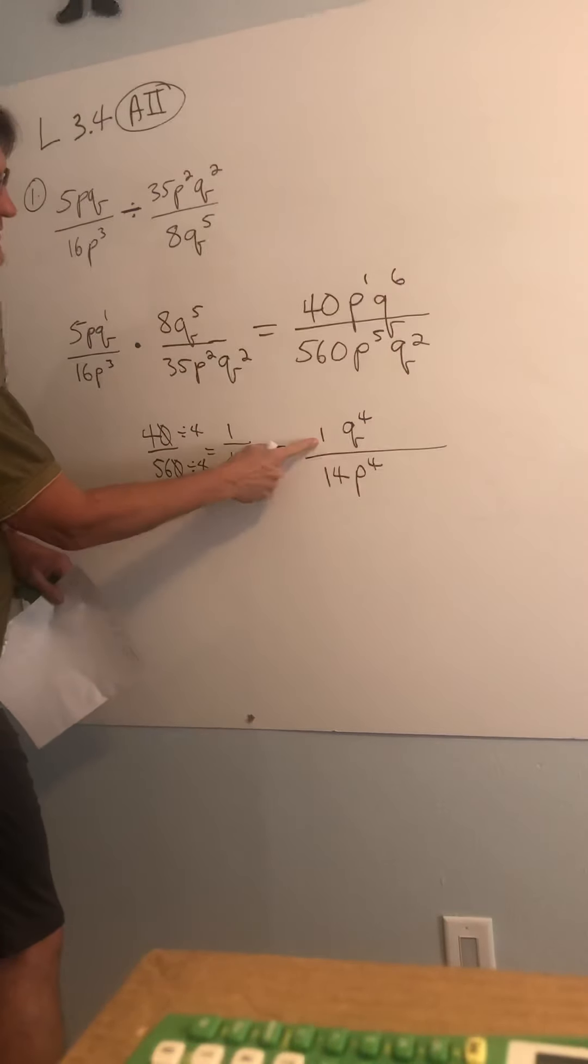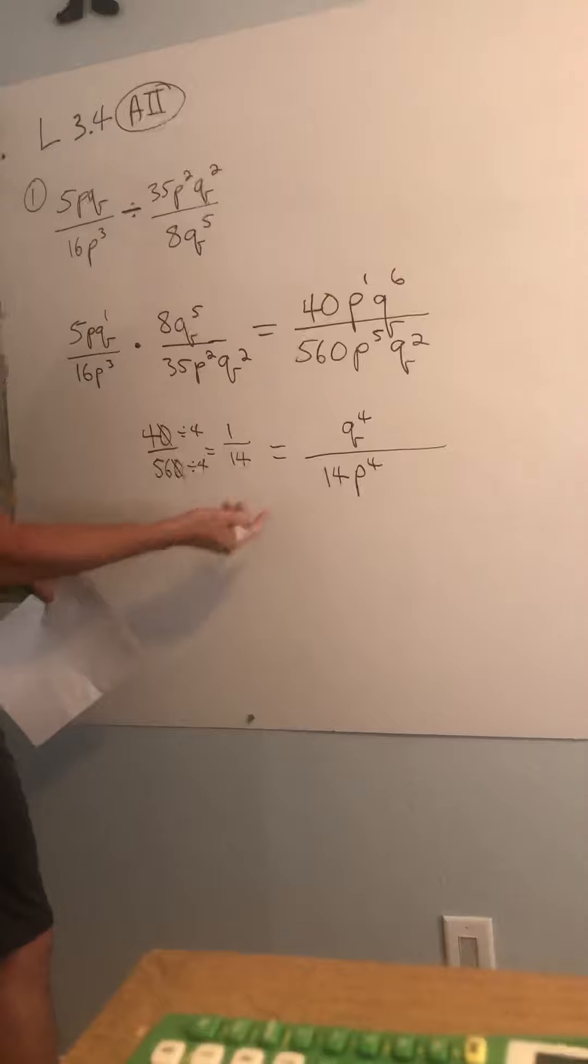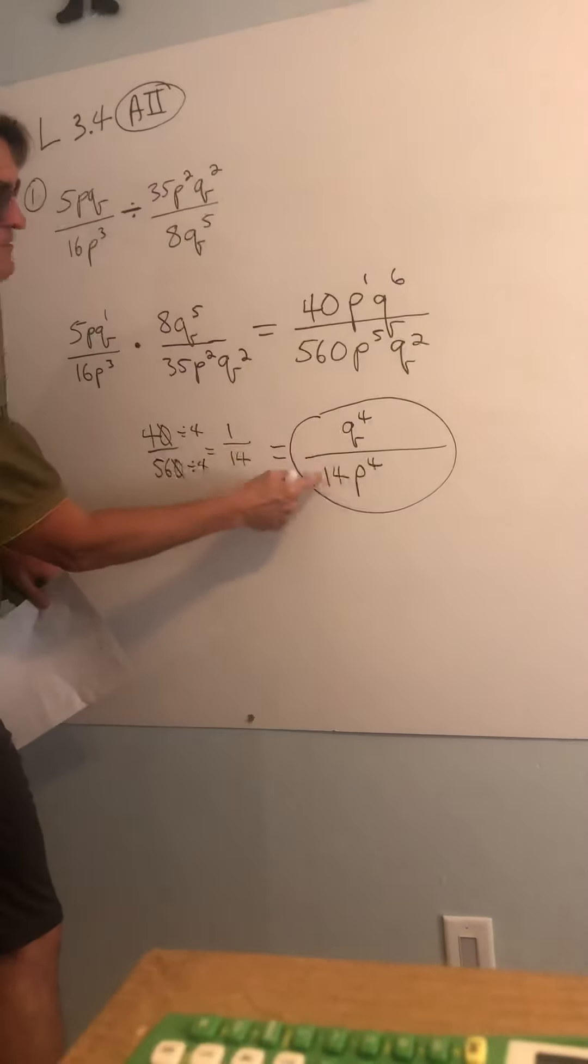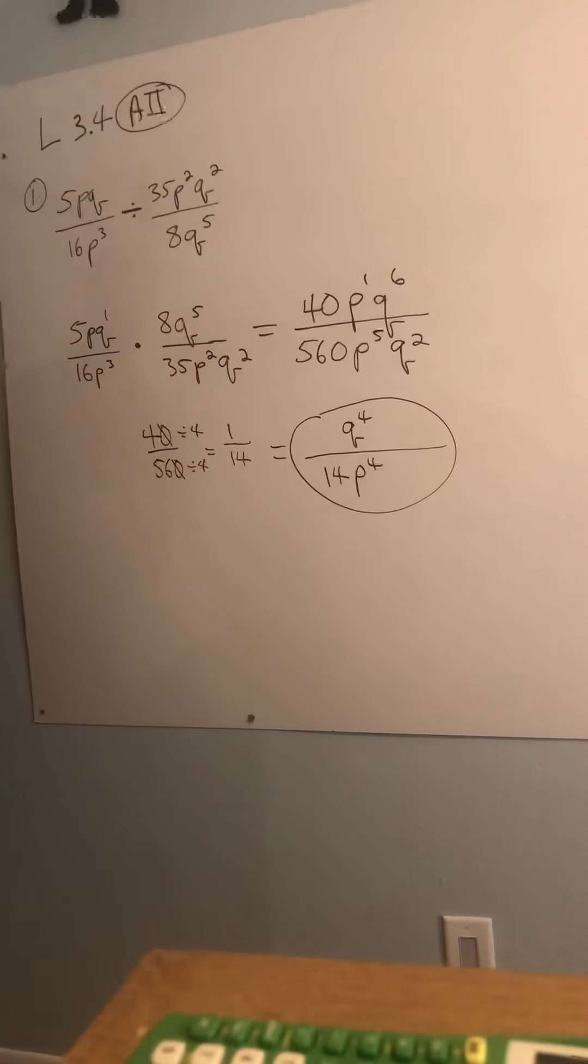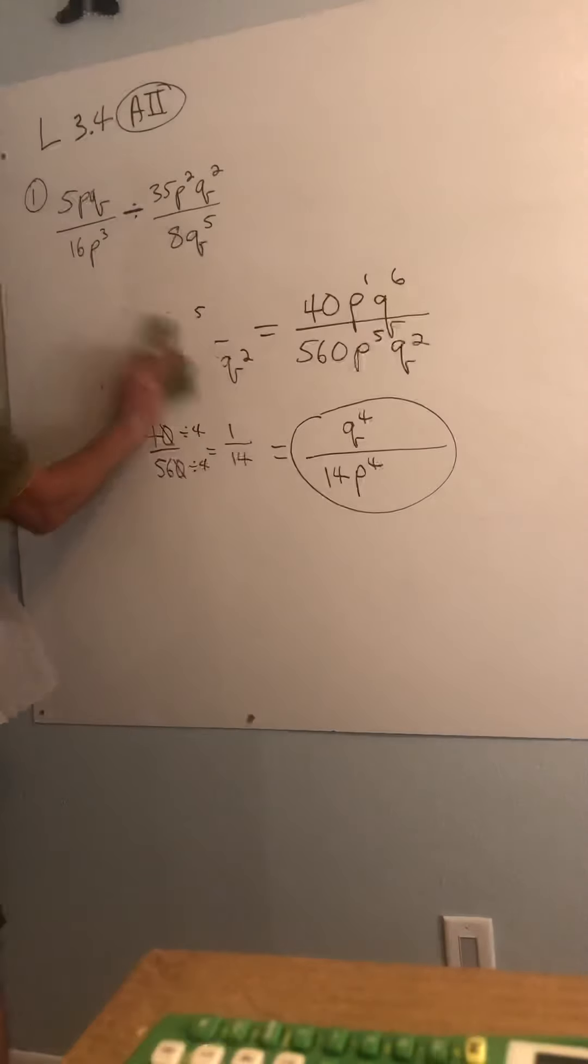The 1, you can leave it, or you can erase it, but this is what we're looking for. How do you know you're done? You can't reduce 1/14th. Q and P are not the same base, so you just leave it alone. How are you doing on example one? Because these aren't the fun ones. I want to find you guys a fun one.